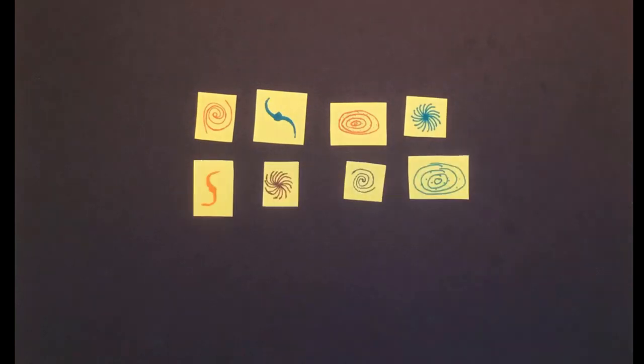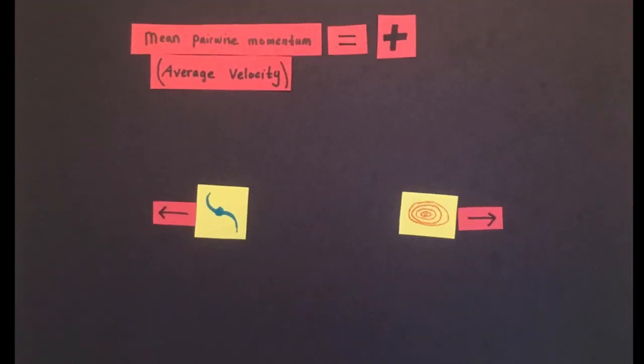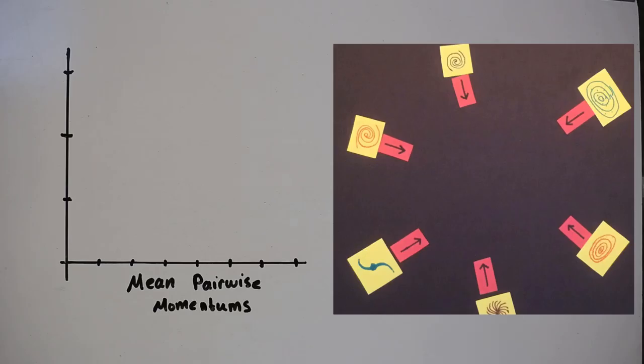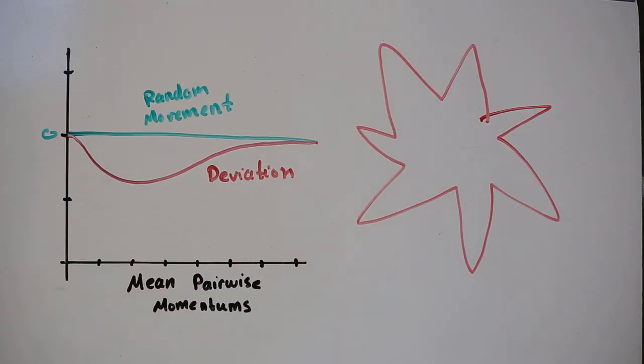In this case, we need more data so that we can find something called the mean pairwise momentum, a value which should be negative, signifying the galaxies are moving towards each other. If the deviation from zero is great enough in the negative direction, then yay! You successfully measured the K-S-Z.